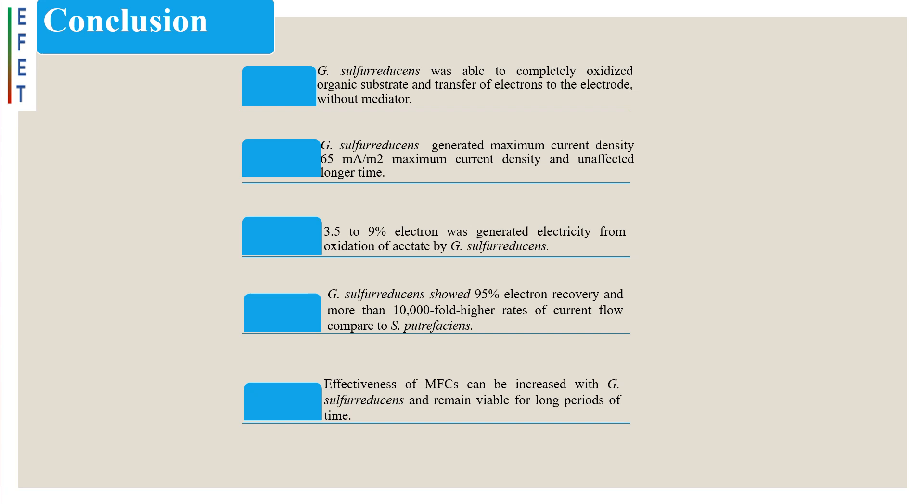3.5 to 9% electron was generated as electricity from oxidation of acetate by Geobacter sulfereducens and showed 95% electron recovery. More than 10,000-fold higher rates of current flow in the poised potential compared to Shewanella putrefaciens.